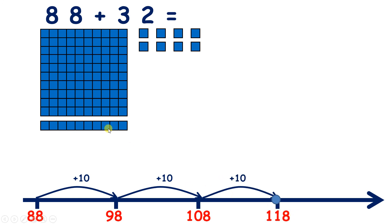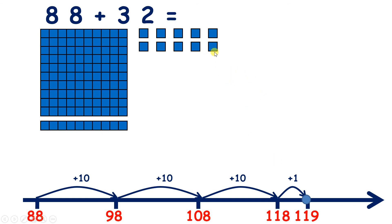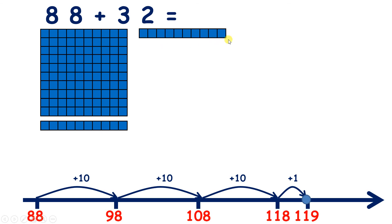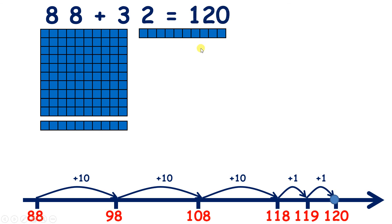We have 100, 110, and eight units. So now we've added our three 10s, we just need to add our two units. One more gives us 119. Another one means we now have 10 units, so we can push them together to make another 10, and that gives us 120. So 88 plus 32 is 120.